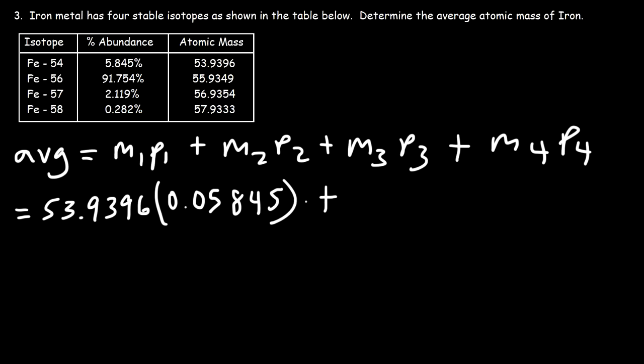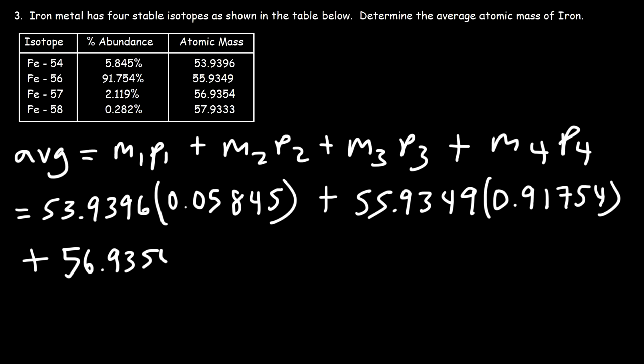Now the mass of the second isotope is 55.9349, and let's multiply that by 0.91754. Now for the next one, M₃, it's going to be 56.9354 times the percentage, which is 0.02119.